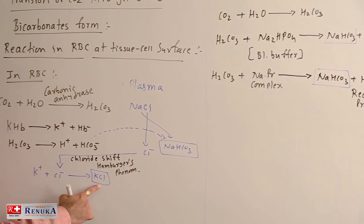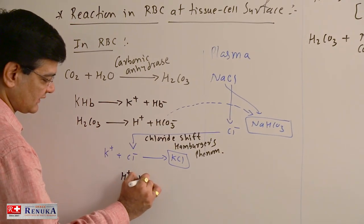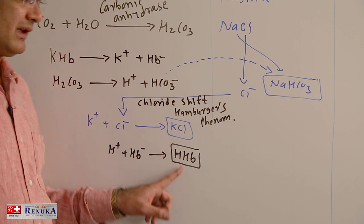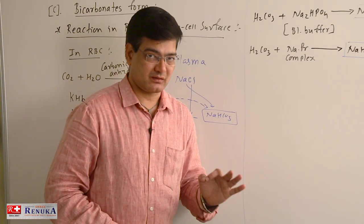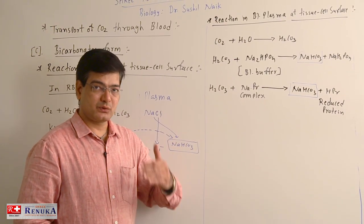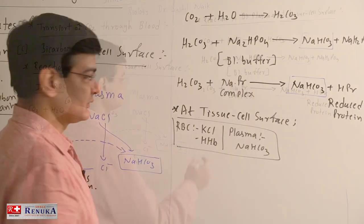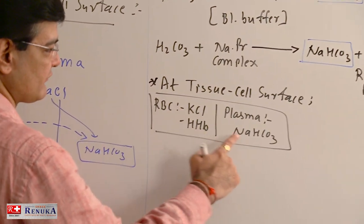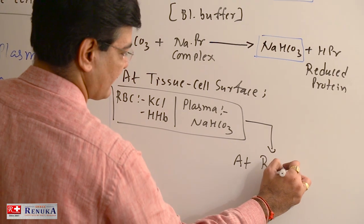In the RBC, KCl is formed, and H+ and Hb- also react with each other to form HHb (reduced hemoglobin). So we have KCl and HHb in the RBC, and NaHCO3 in the blood plasma. These are transported towards the respiratory surface through venous blood. From the tissue cell surface, KCl and HHb in the RBC and NaHCO3 in the blood plasma are transported to the respiratory surface.